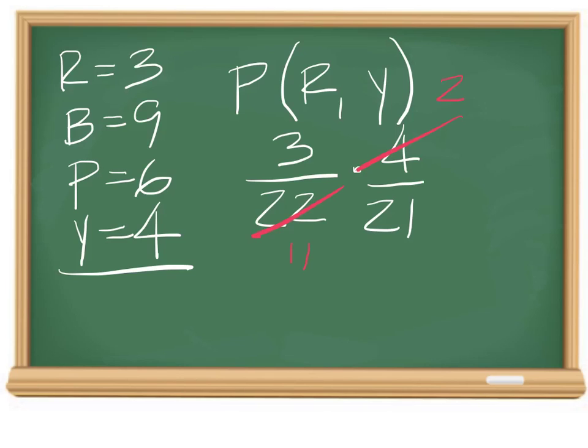it might make it easier to do in your head instead of the calculator. But either way you do it, you should get 6 over, and then 21 times 11 is 231. 6 over 231 is the final answer.